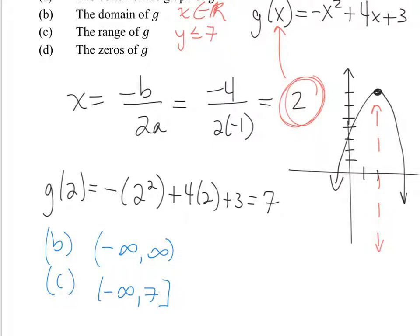Part D asks for the zeros — not the y-intercept. The zeros mean set the function equal to zero. When you set a function equal to zero, it's like setting y equal to zero, which gives you the x-intercepts. So part D is really saying find the x-intercepts.